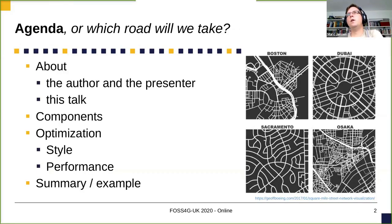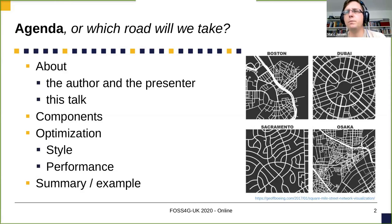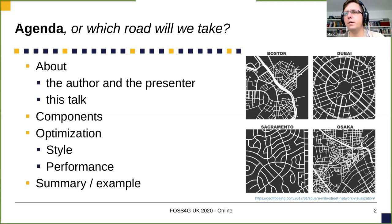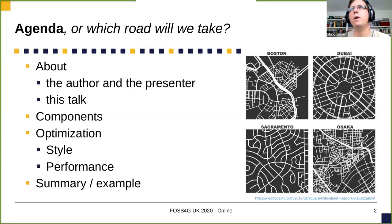So which is the road we are going to take for this talk? We'll start with some very small slides about both the author and the presenter, because those are not the same people, and about this talk in general and what to expect. Then all the components in the title will be shortly explained, and then we'll talk about optimization with two focuses: style and performance. Then I'll close with a summary and probably show an example of how this can work all together.